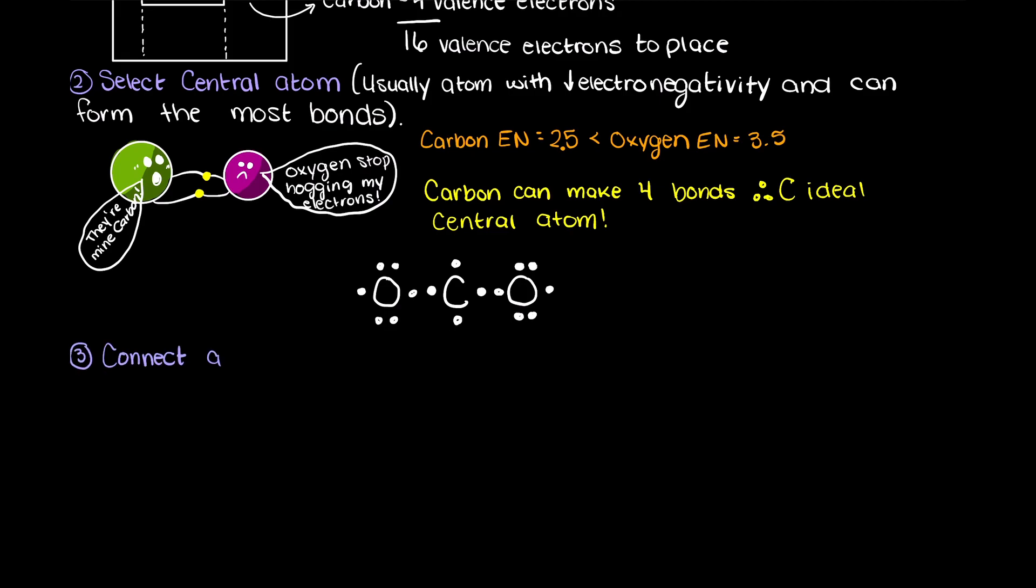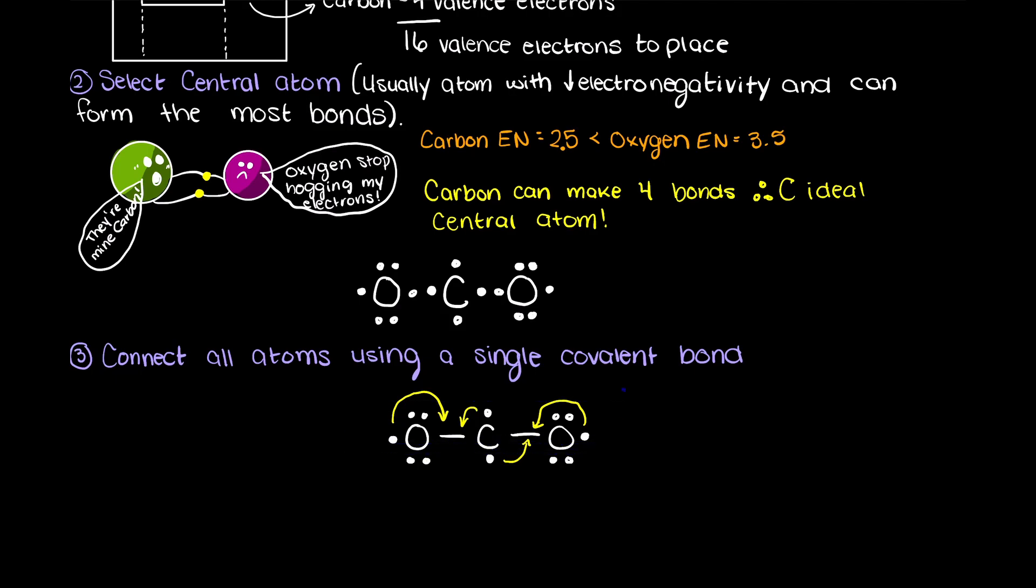Now, in step 3 we need to build our initial covalent bonds to connect all of our atoms in our compound. This is essentially connecting all of our atoms as our outer atoms will share electrons with our central atom. So, these unpaired electrons from carbon and oxygen will form a covalent bond connecting these two atoms like so.